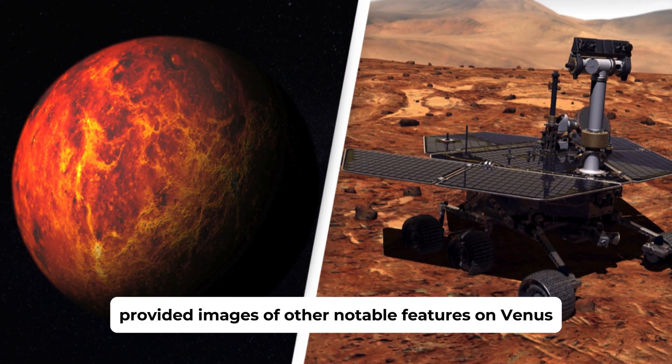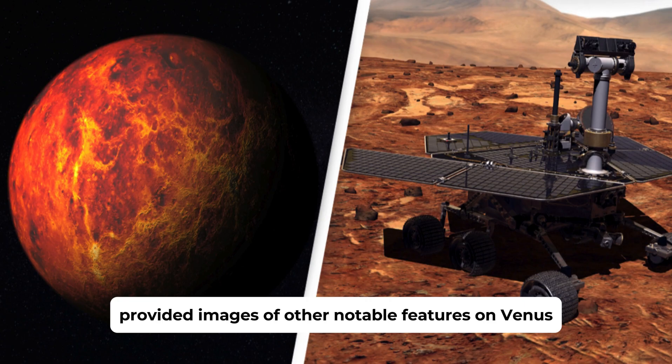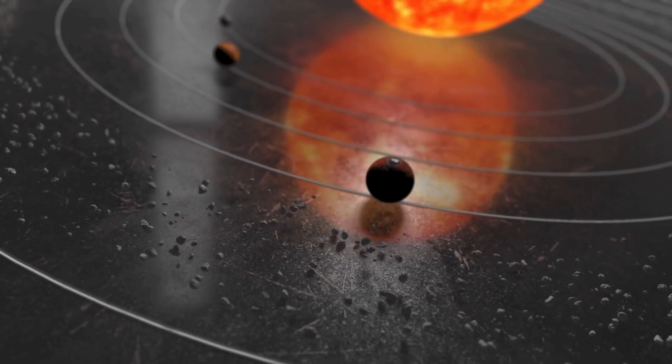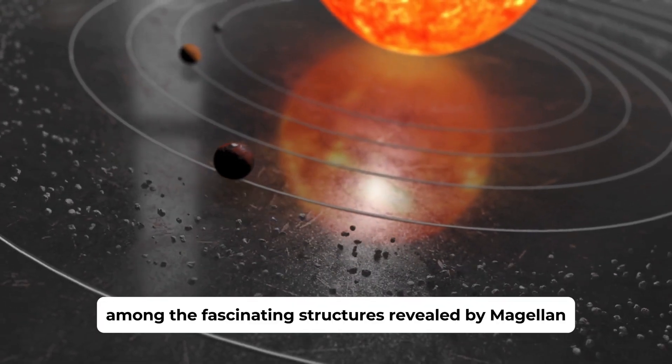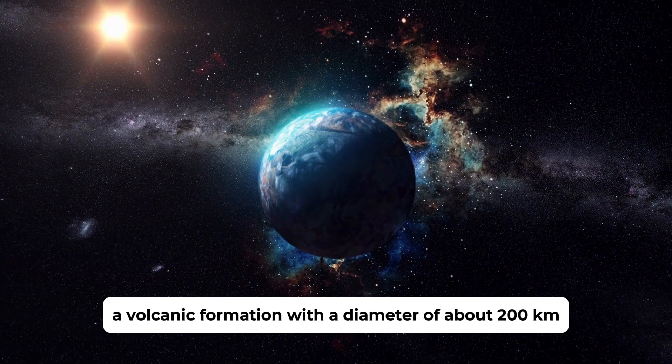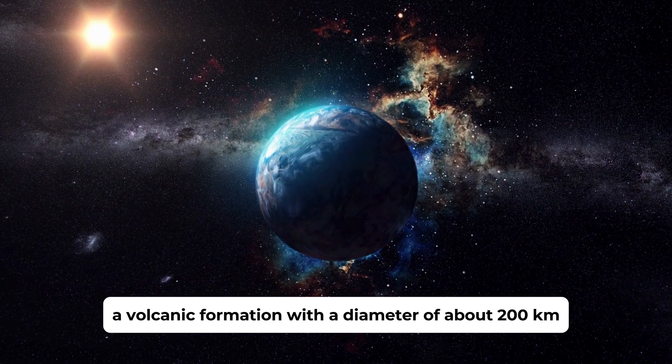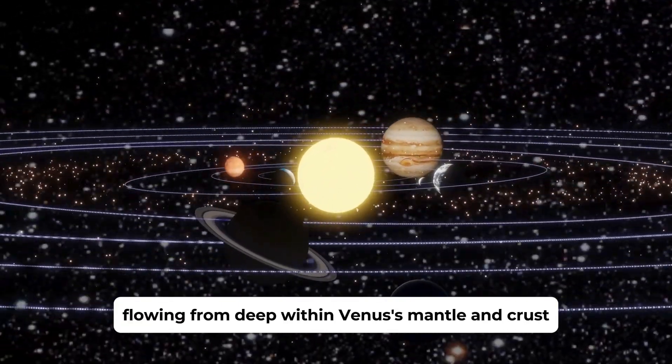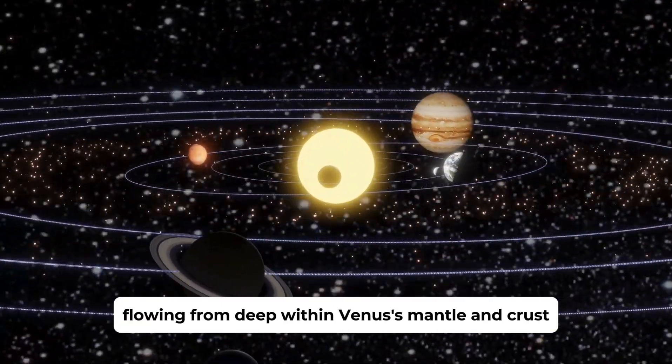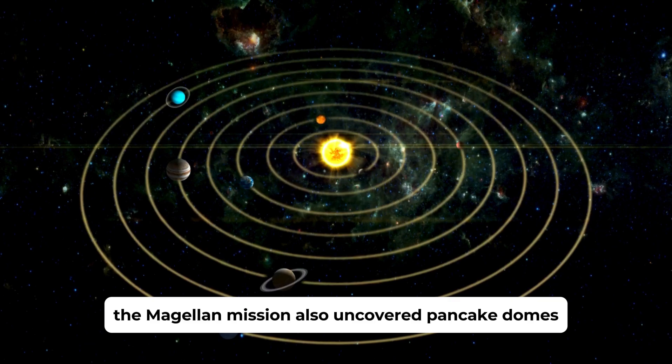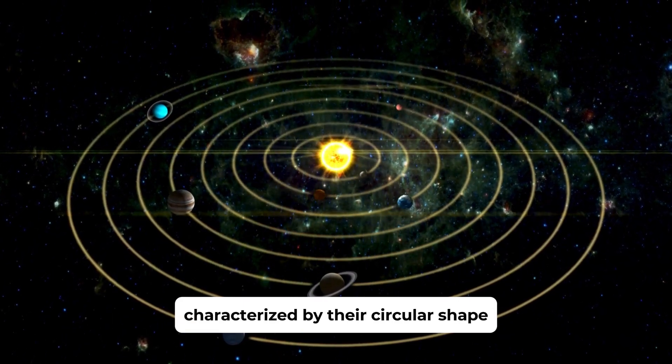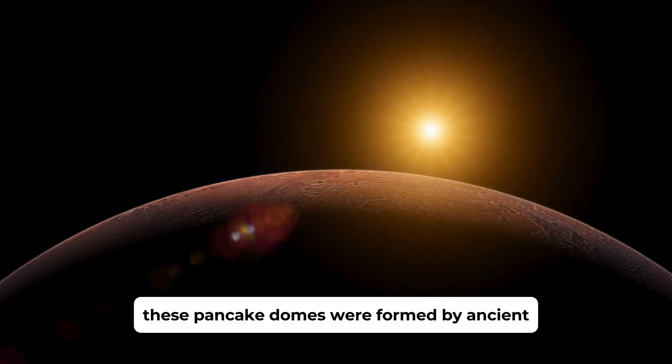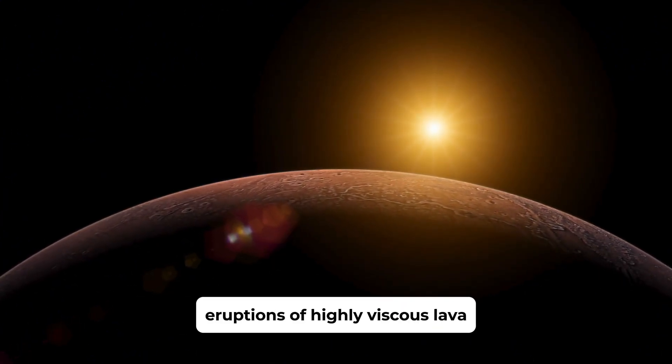The Magellan mission also provided images of other notable features on Venus, including ancient volcanoes, unique meteorite impact craters, and enormous mountains. Among the fascinating structures revealed by Magellan was the giant AIM corona, a volcanic formation with a diameter of about 200 kilometers. Coronas are ring-shaped structures formed by plumes of molten rock flowing from deep within Venus's mantle and crust. The Magellan mission also uncovered pancake domes, unusual volcanic structures characterized by their circular shape and a diameter of approximately 35 kilometers. These pancake domes were formed by ancient eruptions of highly viscous lava.